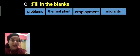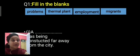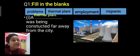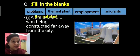And the first blank is, A dash was being constructed far away from the city. What is the answer? Thermal plant. Very good.